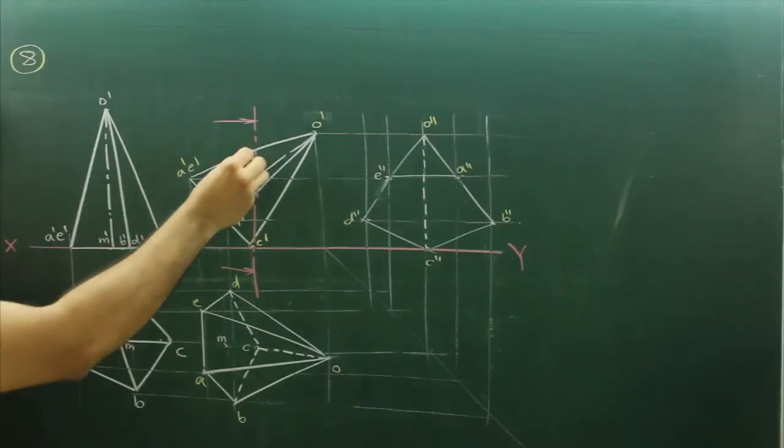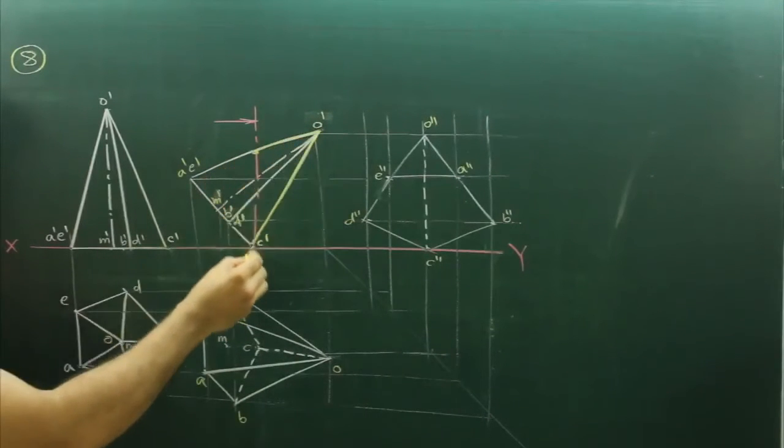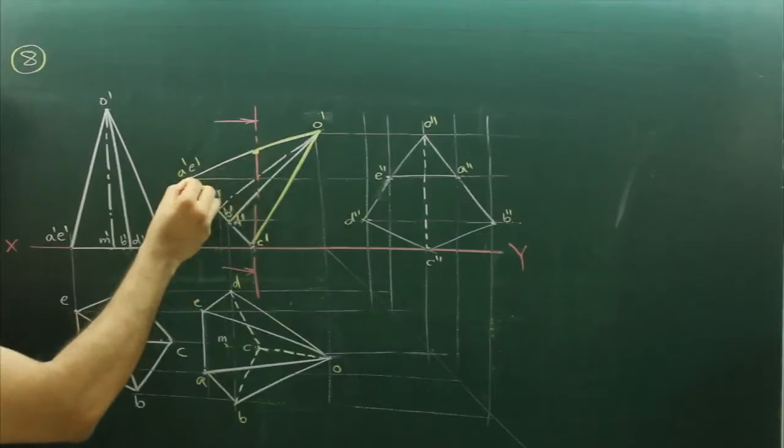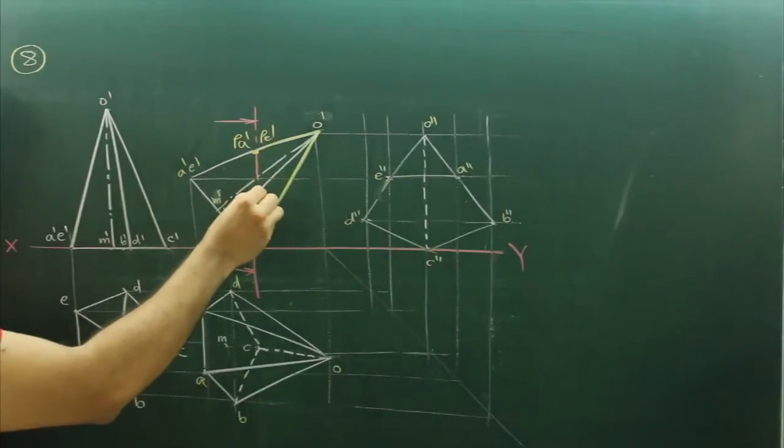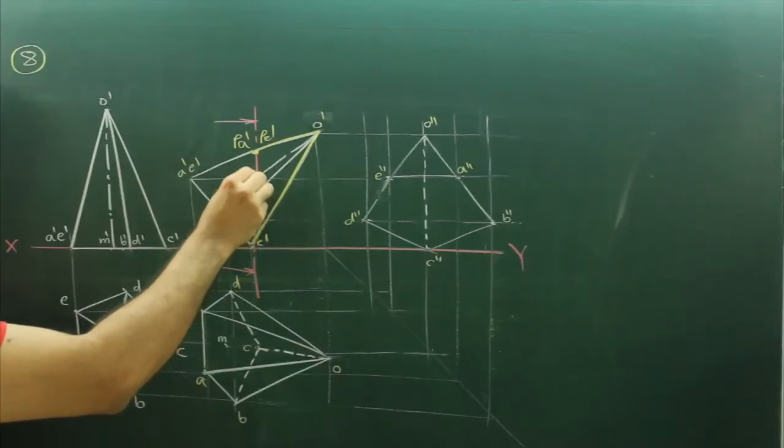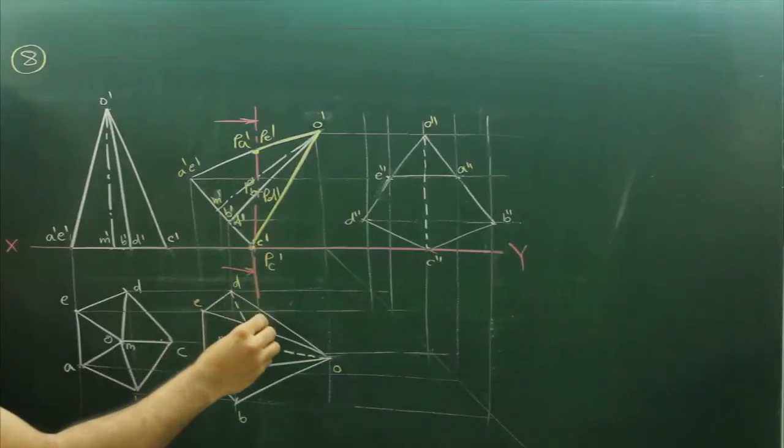And then we start retaining the portion containing the apex. So we will retain this portion. How many points over here we will get? Two points: Pa' and Pe'. Over here we will get two points: PV' and PV', and over here we will get PC'.